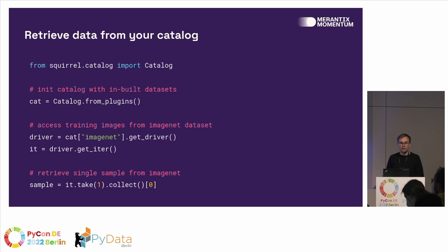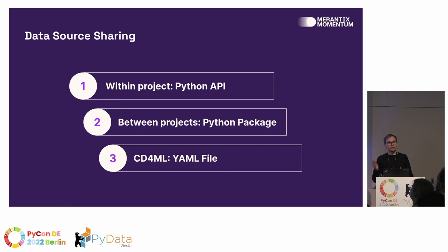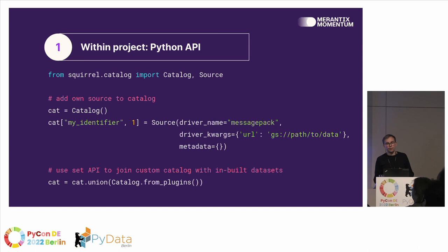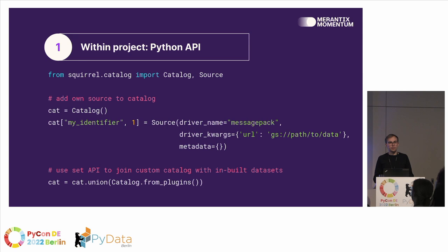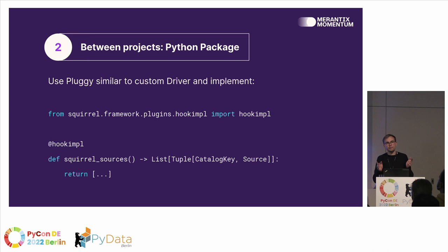We thought there should be three different ways to share data. The first is within a project. Since you have a codebase, why not use the Python API directly? You instantiate a new catalog object, describe your source — which driver to use, the arguments for where to load from, and some metadata — and assign it to an ID with a version. These sources are versioned. We also implemented a set API on top of the catalog so you can do different joins of catalogs — for example, merging your default subscribed catalog with your custom project catalog to get a unified catalog accessing all datasets.